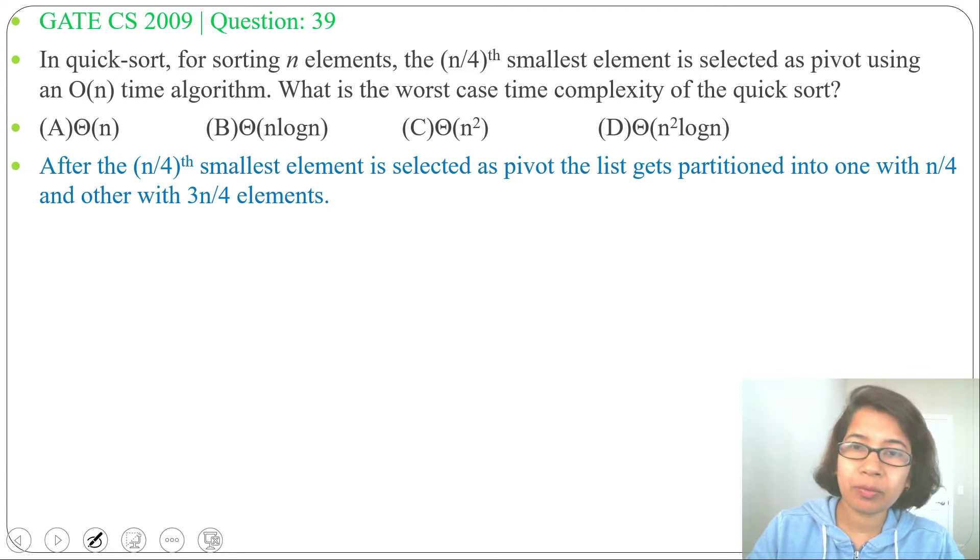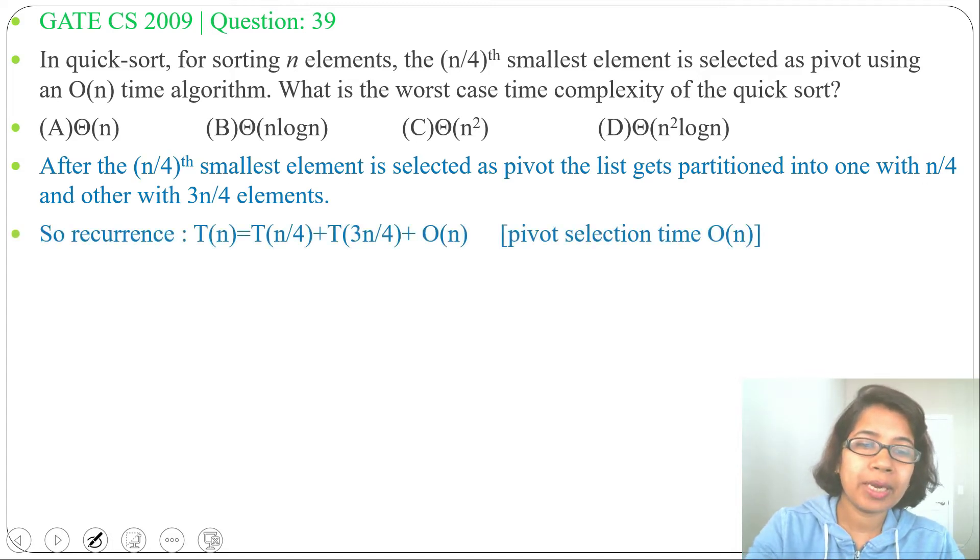and the other with 3n/4 elements. So what will be the recurrence relation? The recurrence relation will be T(n) = T(n/4) + T(3n/4) + O(n),